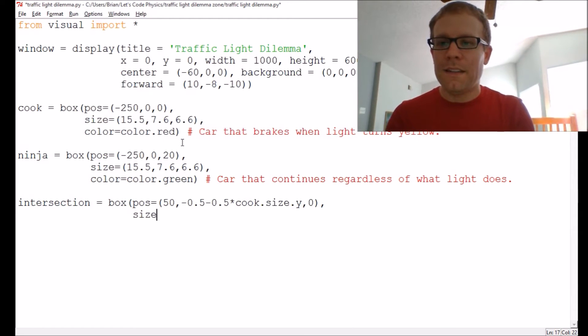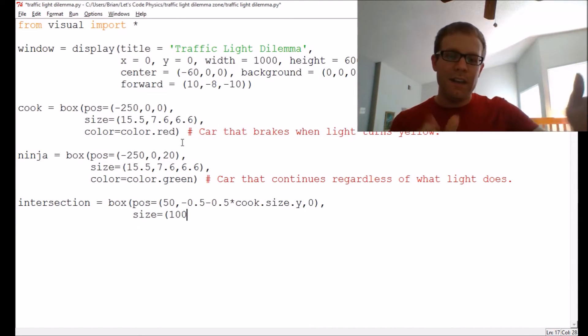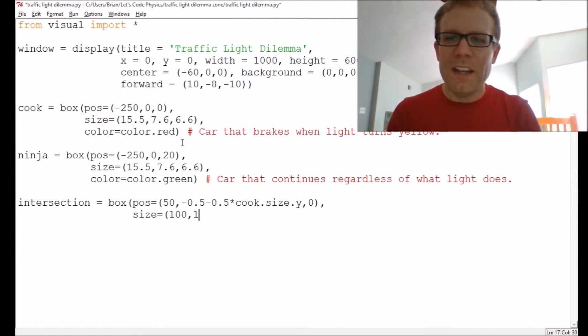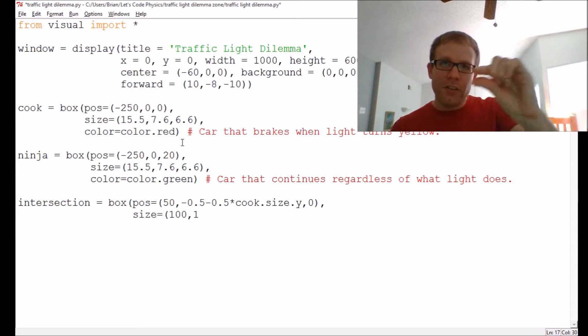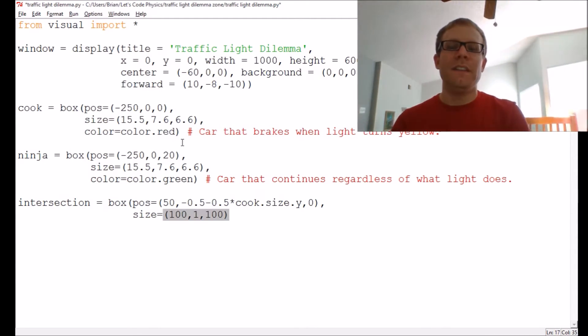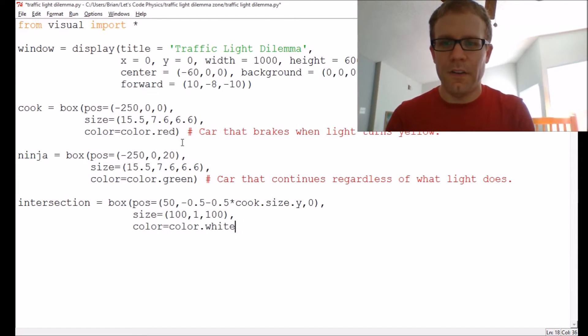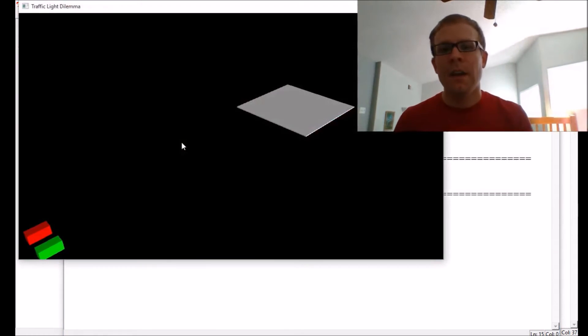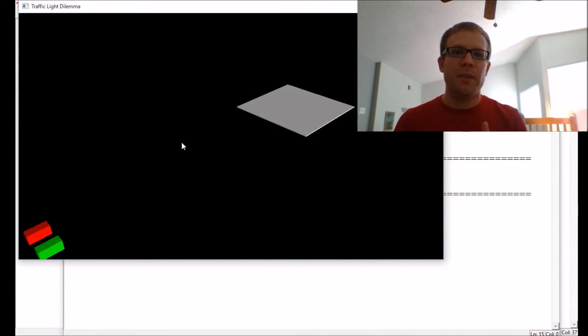We'll have it be at Z equals zero. There we go. So there's its position. Its size is going to be a hundred feet long. So that's a hundred in the X direction. We'll make it just one deep in the Y direction. So this is literally going to be a little slab that they drive over and a hundred feet in the Z direction, just so it's nice and square. And let's just have white for right now. And let's run the code and double check. Okay. So this is looking pretty good. We've got our intersection here. We've got our two cars. And the reason I want to make a square for the intersection is because we're interested in seeing when they cross the intersection and when they clear the intersection.